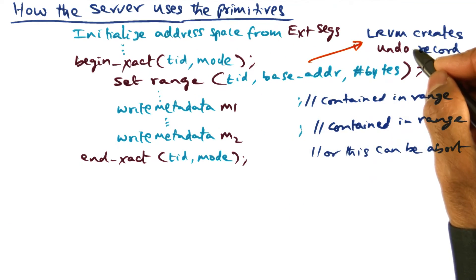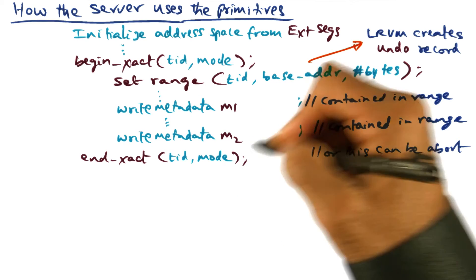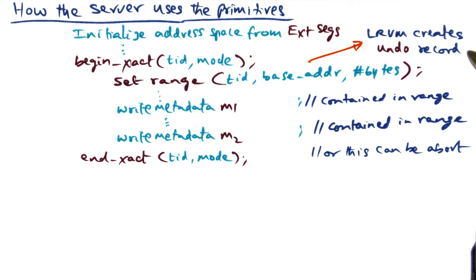In any event, if the transaction eventually commits, at that point, LRVM will throw away this undo record.